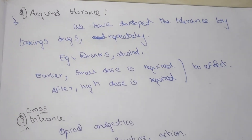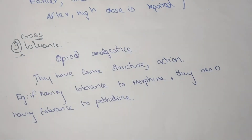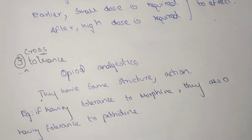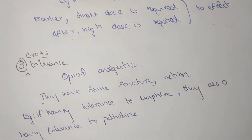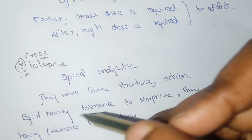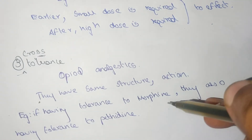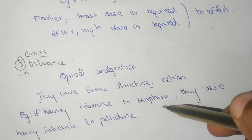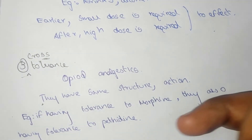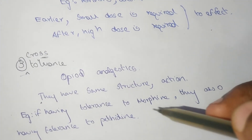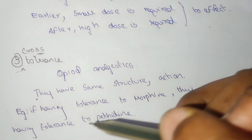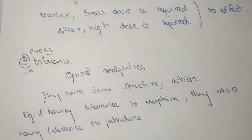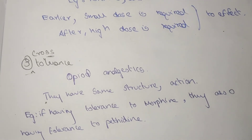This is known as acquired tolerance. Now, cross tolerance — cross tolerance means that opiate analgesics have the same structure and action. If a person has tolerance to morphine, they also have tolerance to pethidine, because morphine and pethidine have the same action as well as the same structure. The tolerance produced by morphine extends to pethidine, and this is known as cross tolerance.